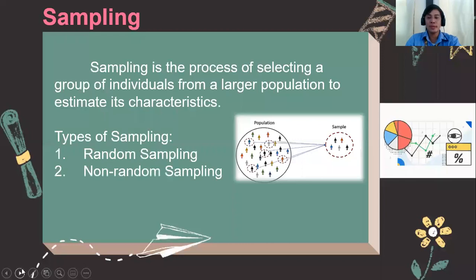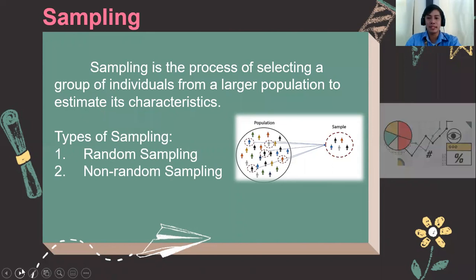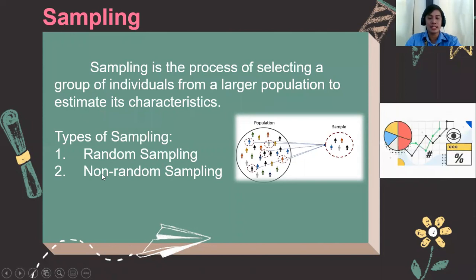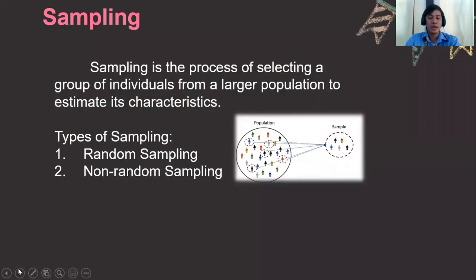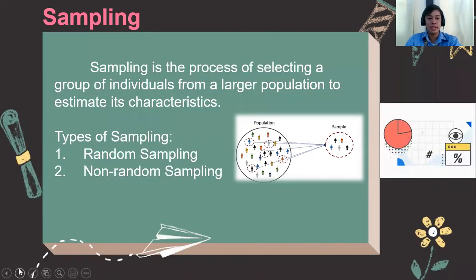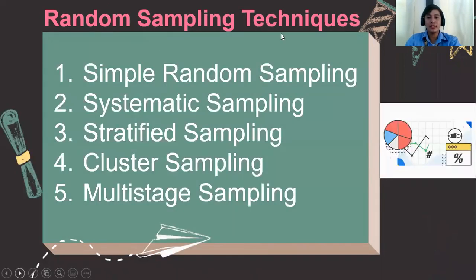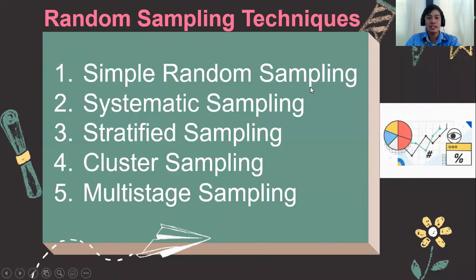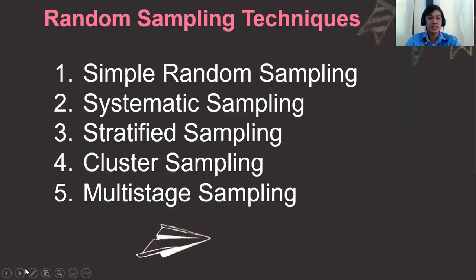We have two types of sampling techniques: random sampling and non-random sampling. But for today's discussion, since it involves statistical analysis, we will only talk about the random sampling techniques, which are used for quantitative types of data. Here are the different types of random sampling techniques: simple random sampling, systematic sampling, stratified sampling, cluster sampling, and multi-stage sampling.